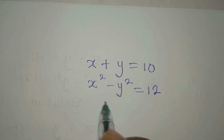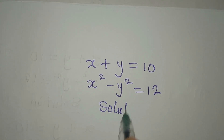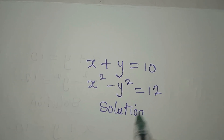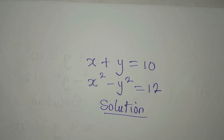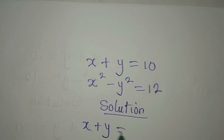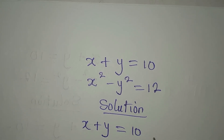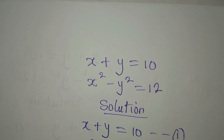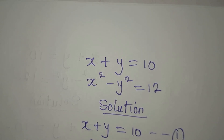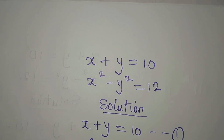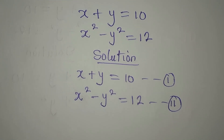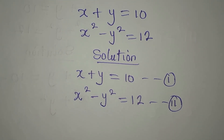Let's provide a solution to this problem. x plus y equals 10 — this is equation 1. Then we have x squared minus y squared equals 12 — this is equation 2.